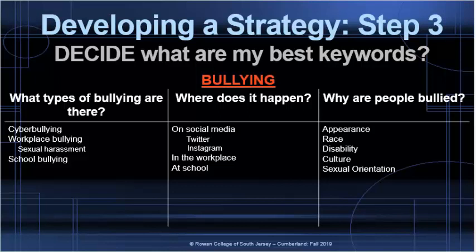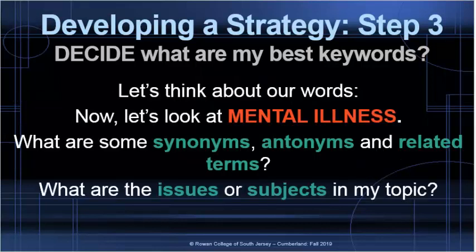Now that we have some more keywords, let's move on to our second term, which is mental illness. Let's think about our words again — synonyms, antonyms, and related terms. We also want to think about issues or subjects surrounding our topic of mental illness.